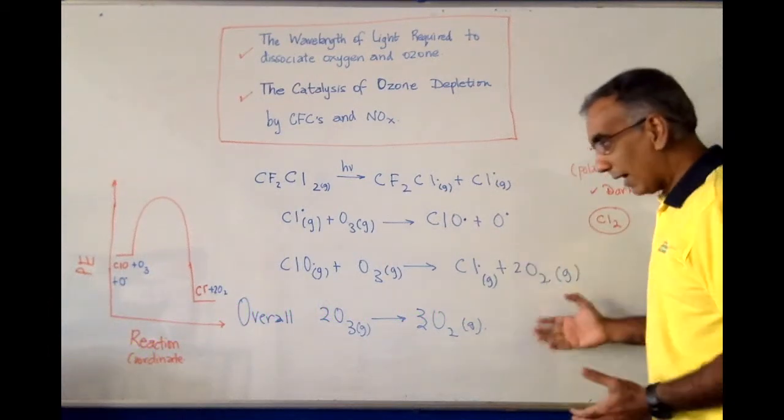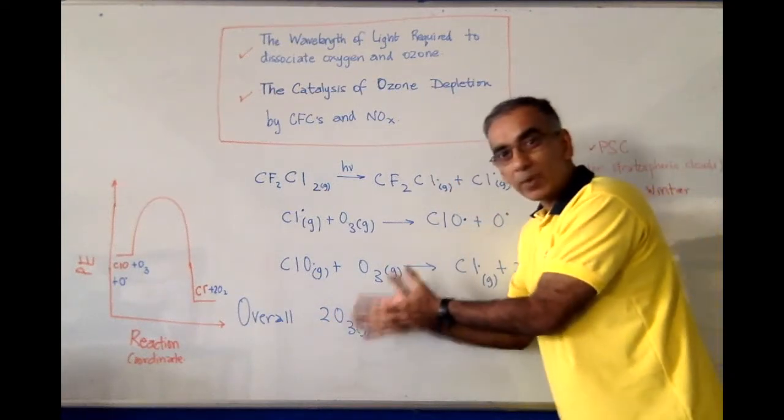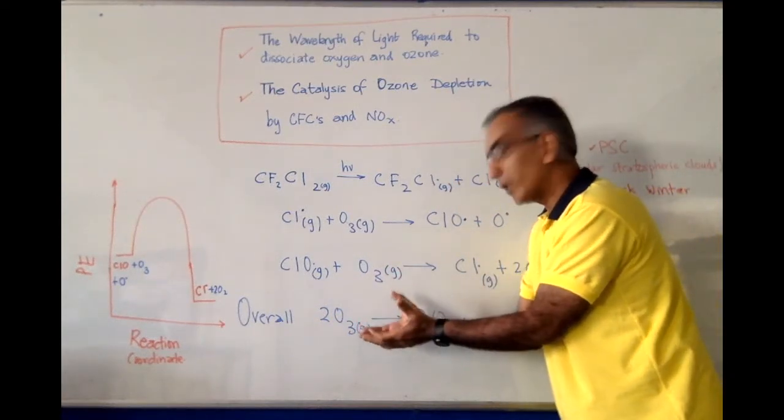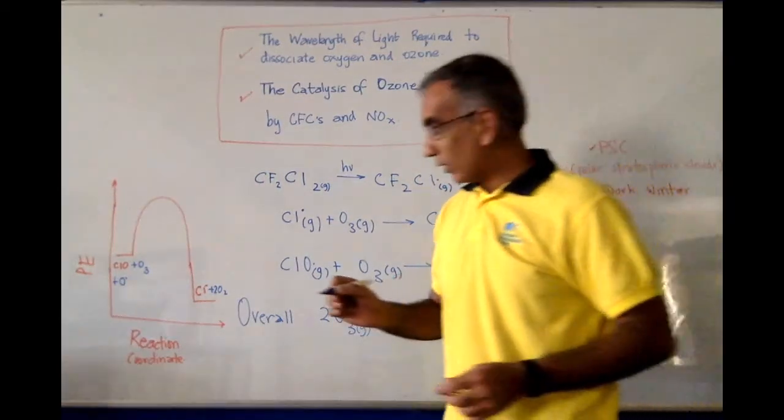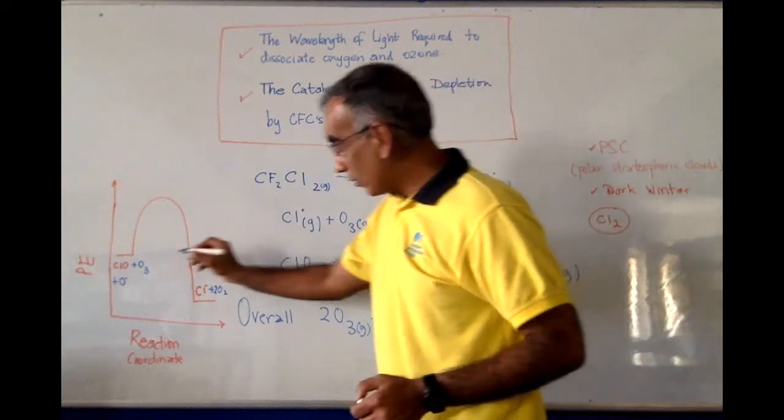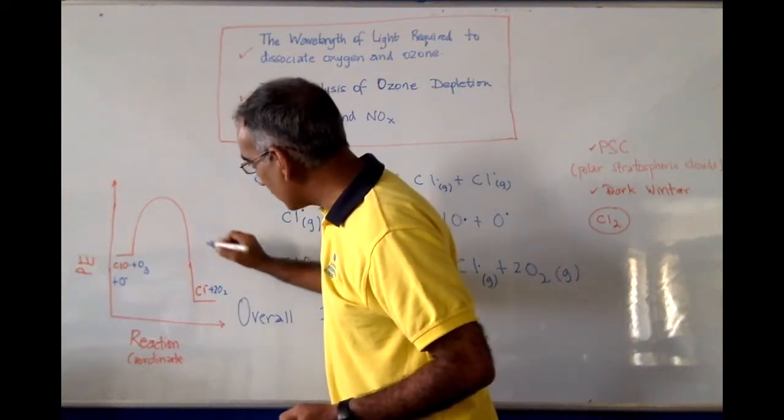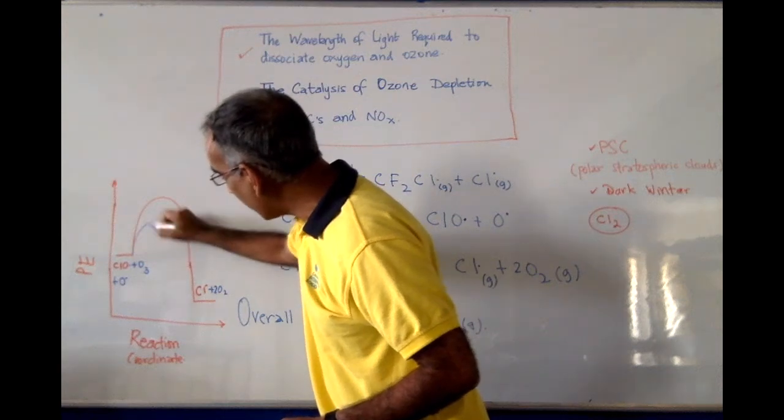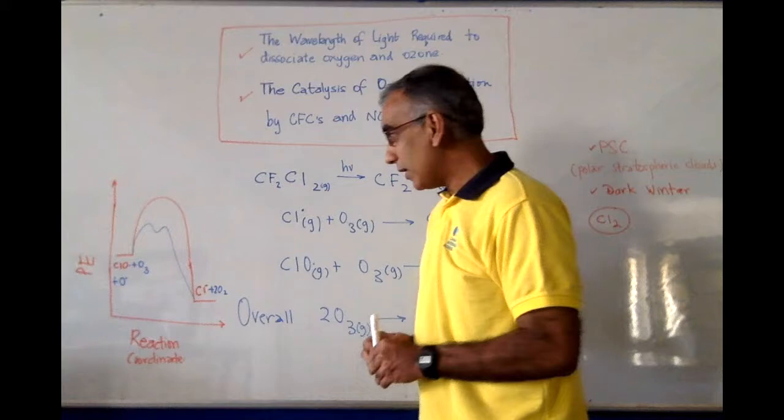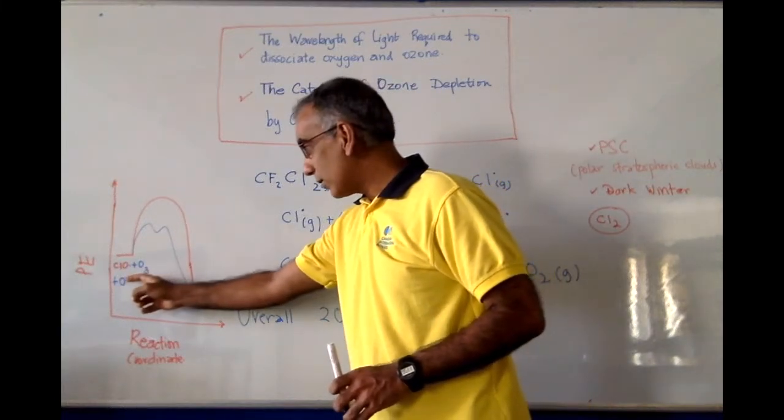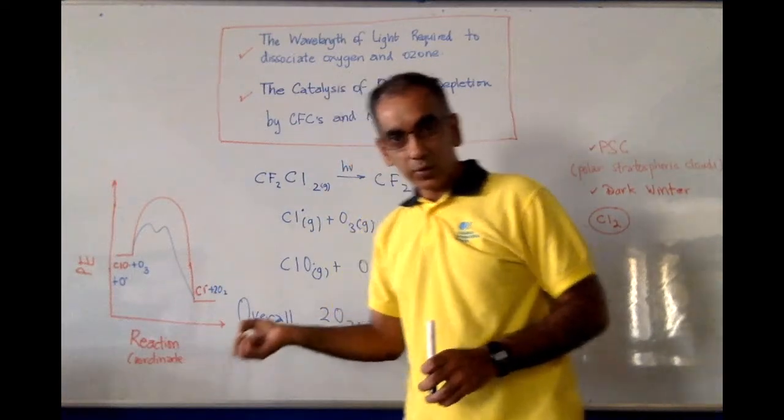So in effect, what happens is that O3, which has the property of shielding the Earth from UV rays, gets converted into O2. And the presence of the chlorine-free radical in creating the ClO species allows for a lowering of the activation energy, and for it to be much more easy for O3 to combine with the free radical of oxygen to produce O2.